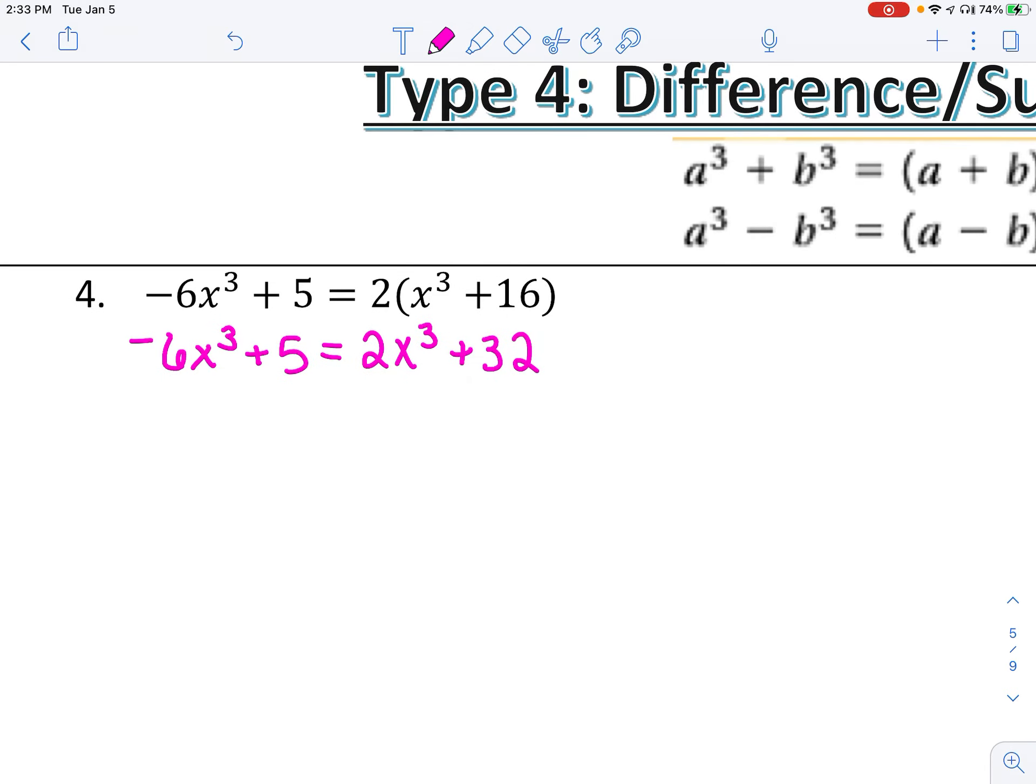I'm going to move everything to the right because I don't like this negative over here. So I'm going to add 6x cubed and subtract 5 to get it equal to zero. I like to keep my leading term positive. So that makes 8x cubed plus 27 equal to zero.